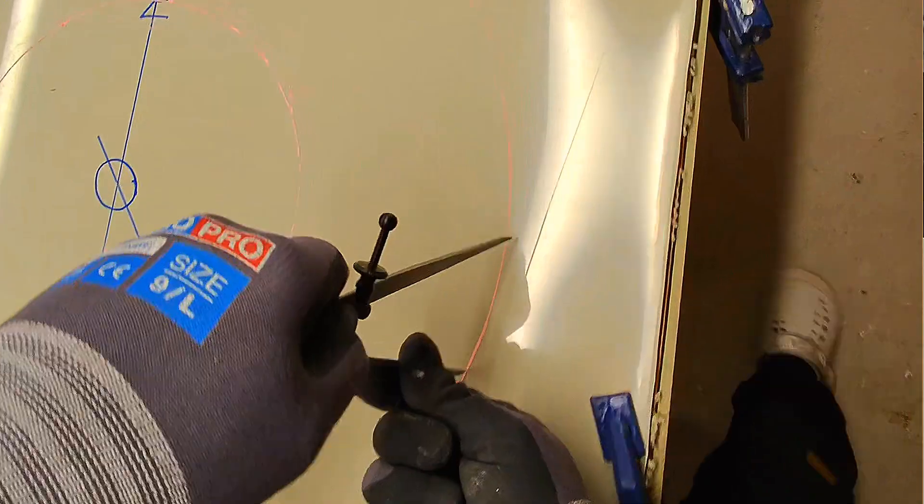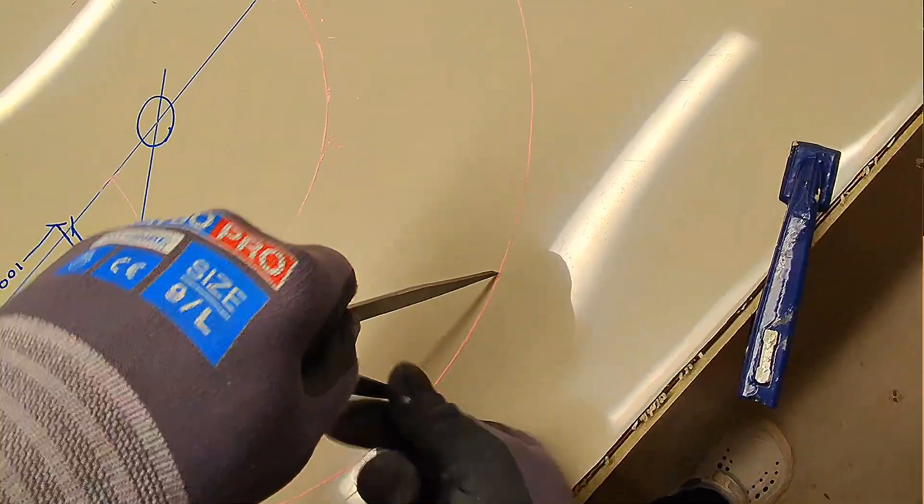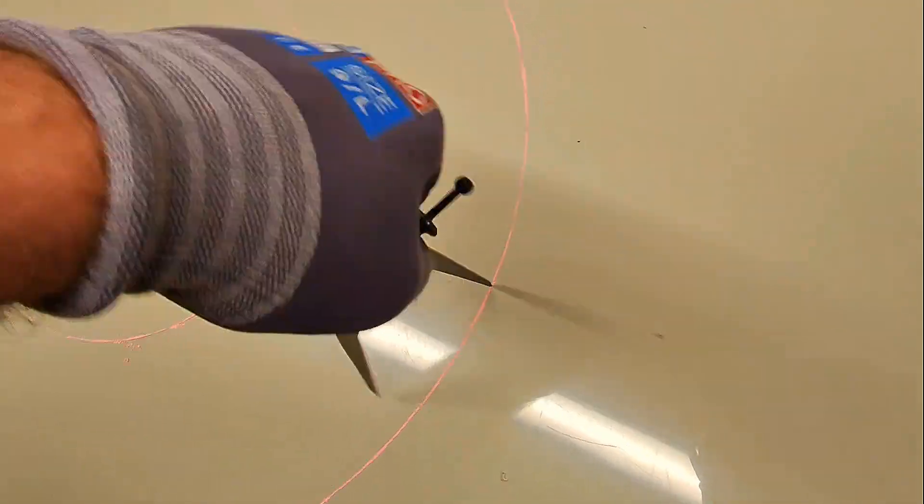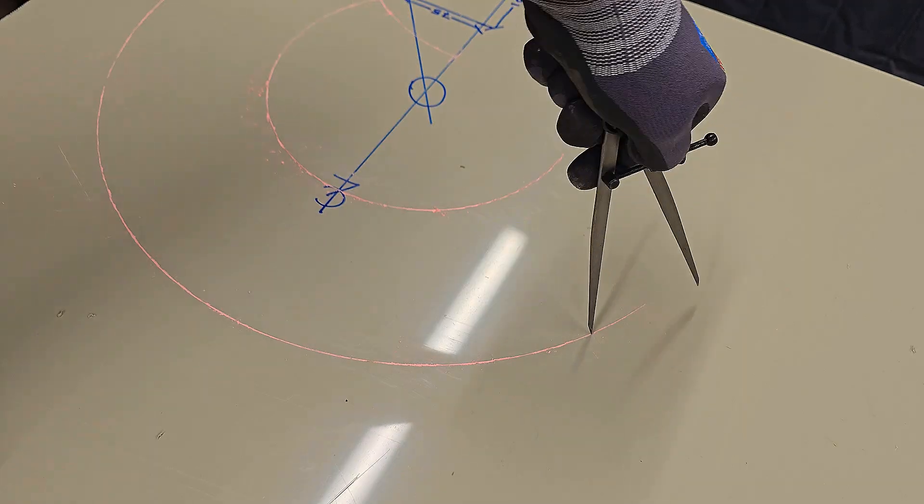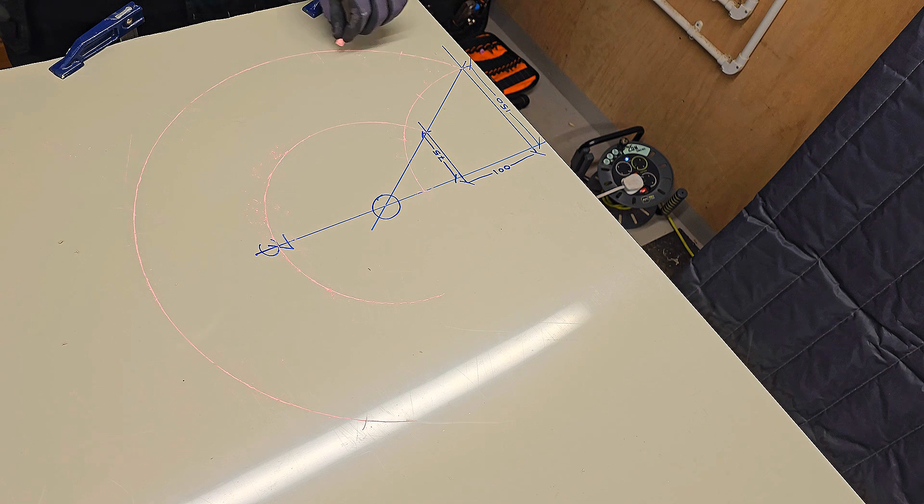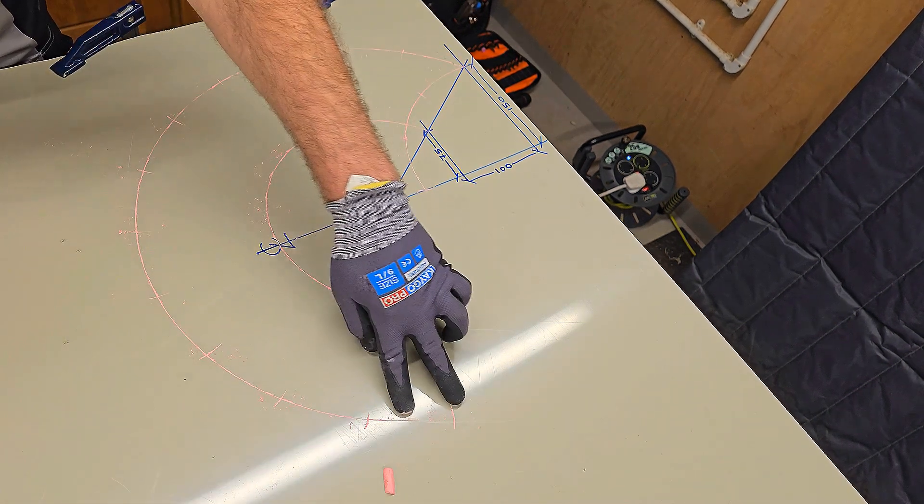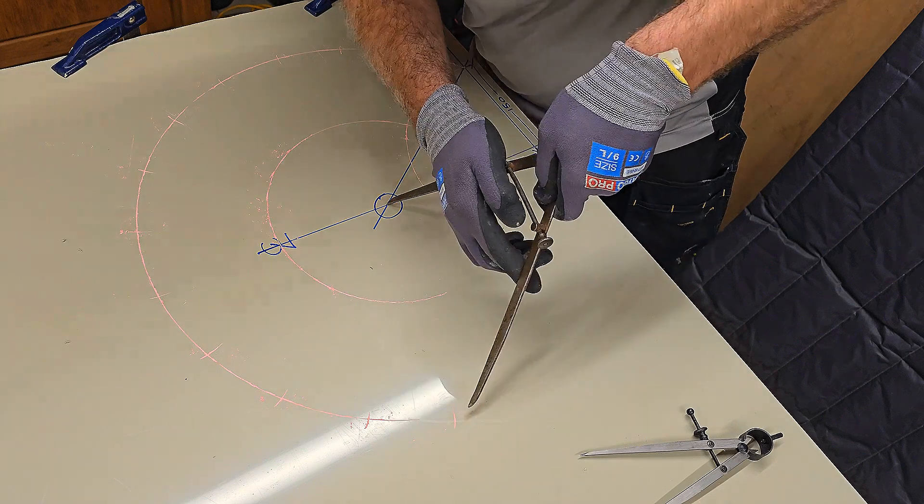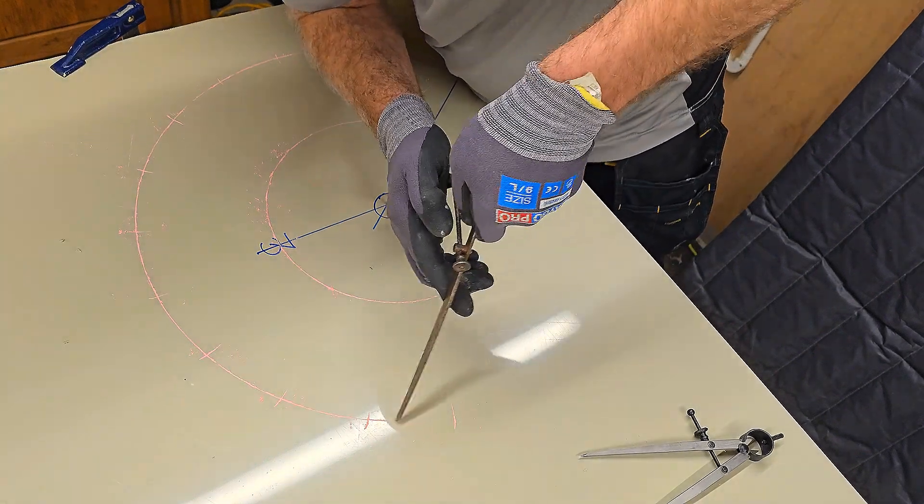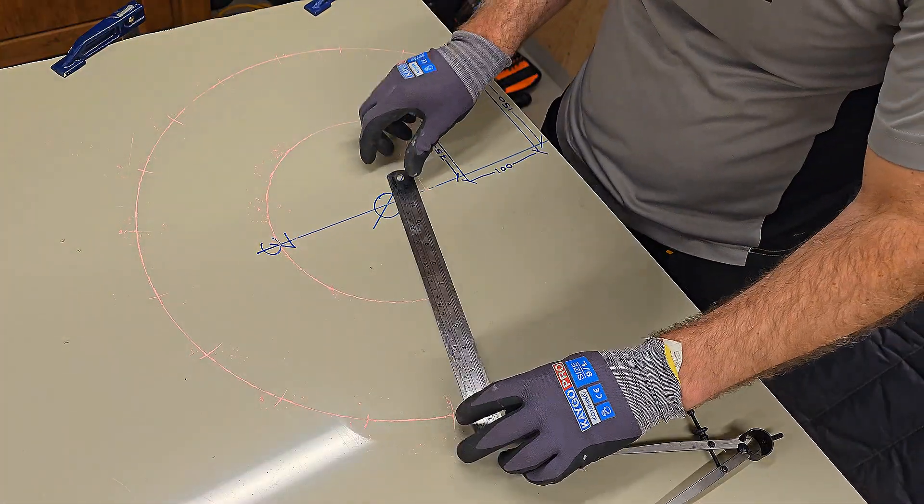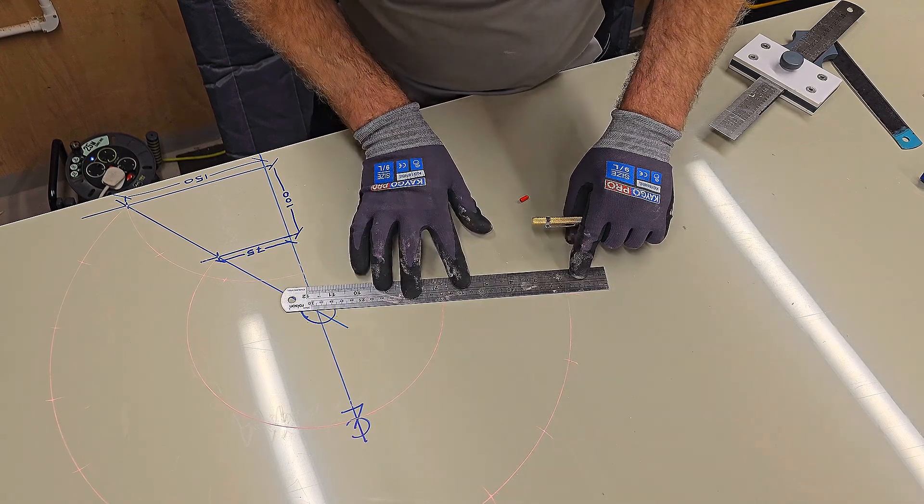Mark 12 equal spaces. My circumference is a bit short, so I'll just extend it. Now we can strike a line from the last mark to the apex.